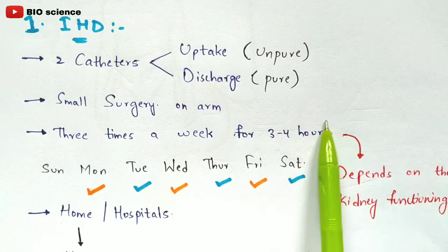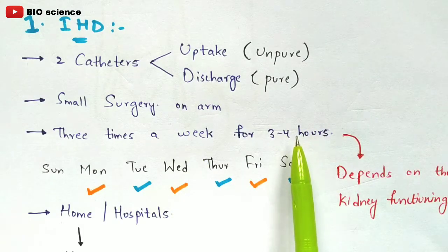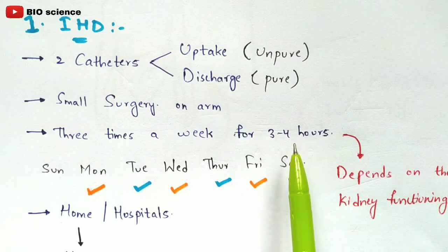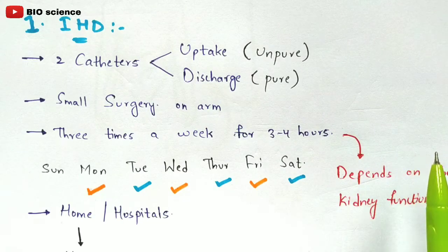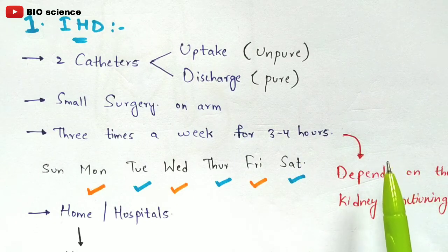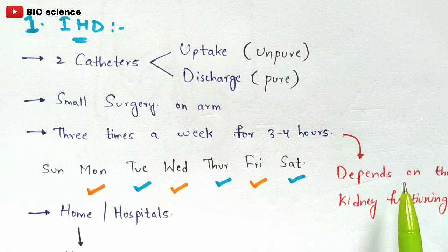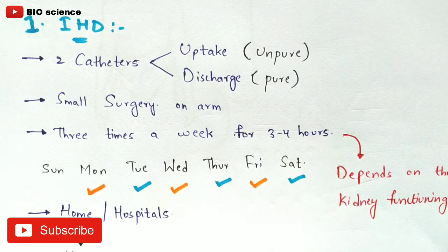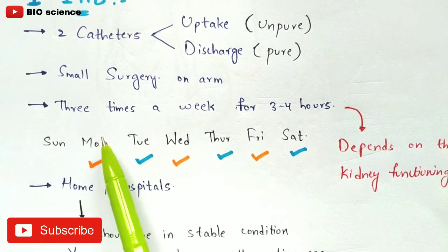The session duration of three to four hours can increase depending on kidney function. If the kidney is around 50% damaged, three to four hours may be sufficient. If it is damaged up to 70% or more, a longer duration is required.